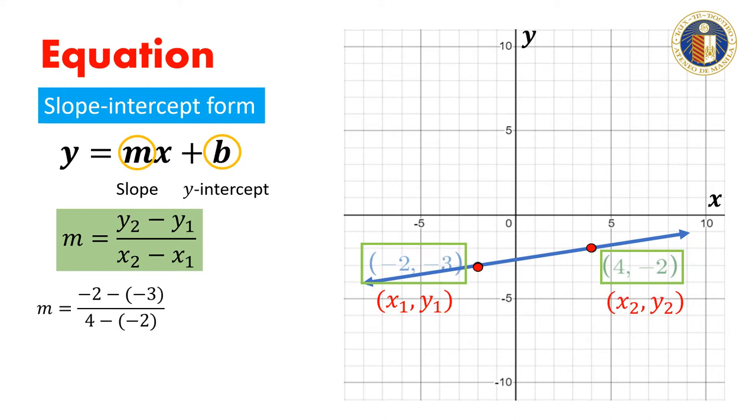The slope of the line is equal to m equals -2 minus (-3) all over 4 minus (-2). We have m equals -2 plus 3 all over 4 plus 2. Simplifying, we get m equals 1/6.